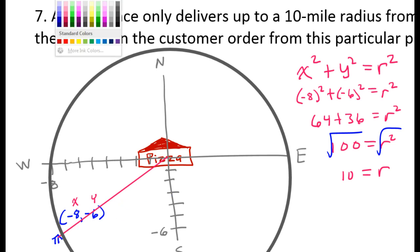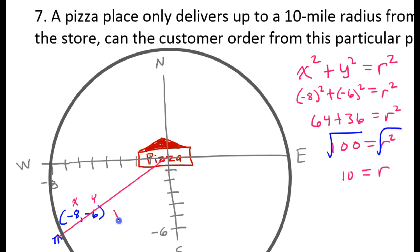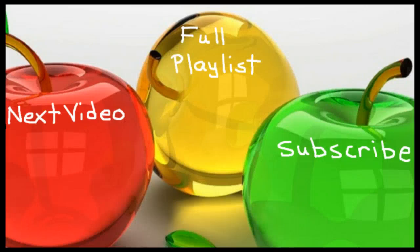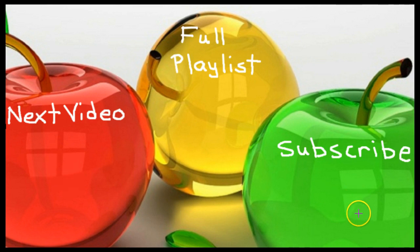Now that we know the radius of this circle is 10, we know that the customer is 10 miles away from the pizza place. The pizza place delivers up to a 10-mile radius, so the customer is okay and they can get delivery. Whenever you solve a word problem, you should write a nice summary sentence for your final answer. That's going to do it for this video — click the red apple to watch the next video, the green apple to subscribe, or the yellow apple for the full playlist.